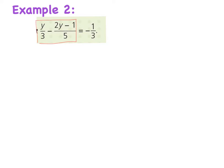To subtract two fractions I find a common denominator. In this case a number that both 3 and 5 go into is 15. I place that as my denominator and put equals minus one third, keeping the right-hand side aside for now.